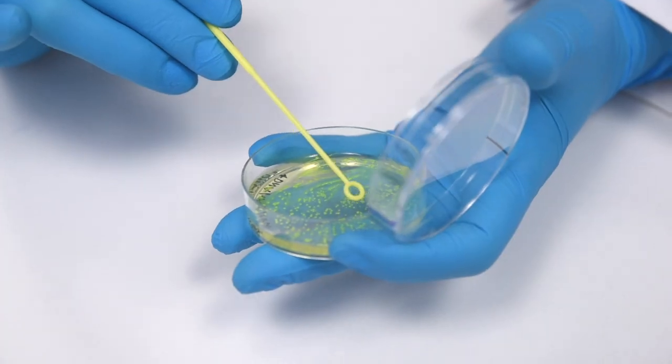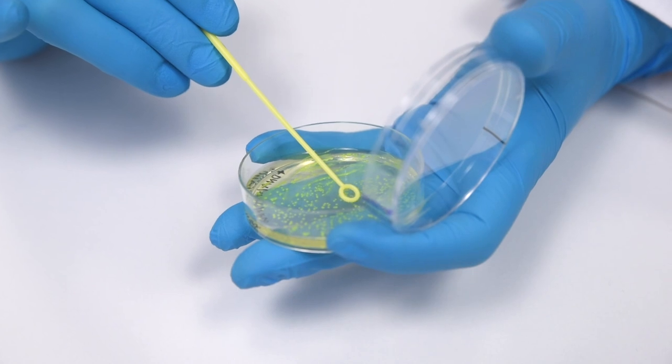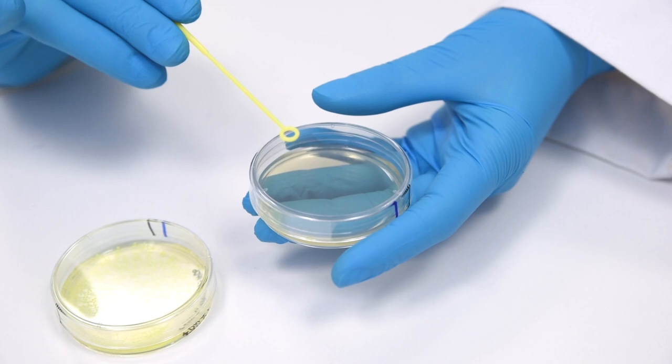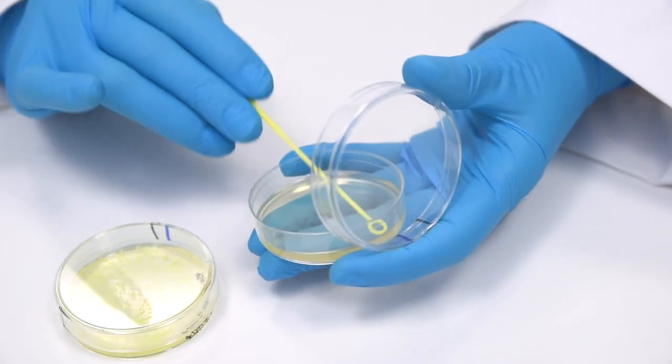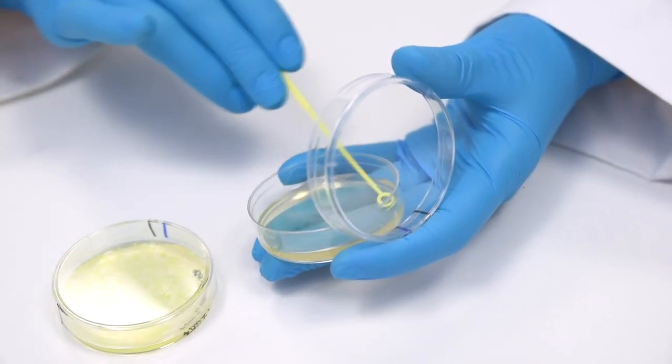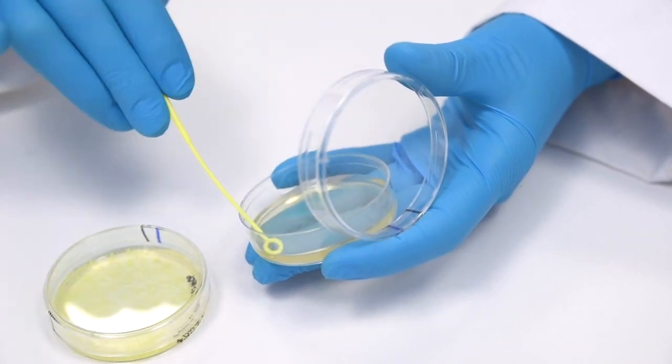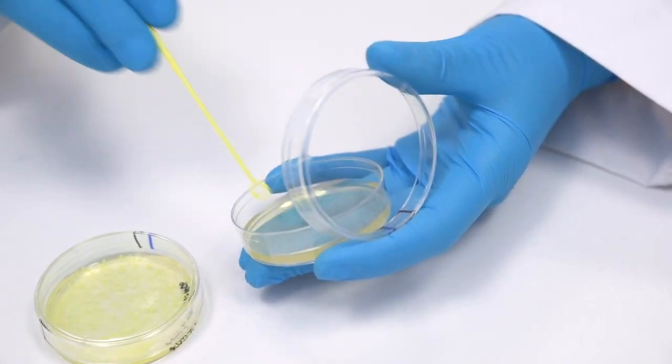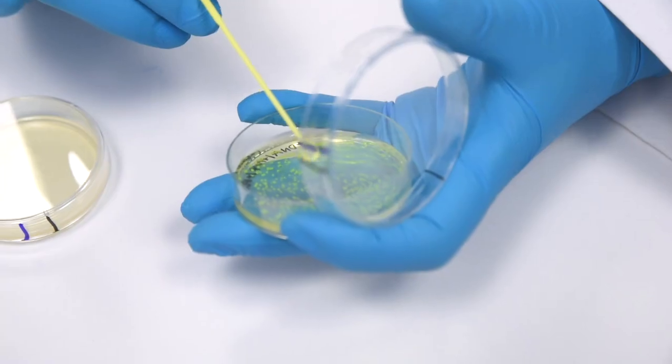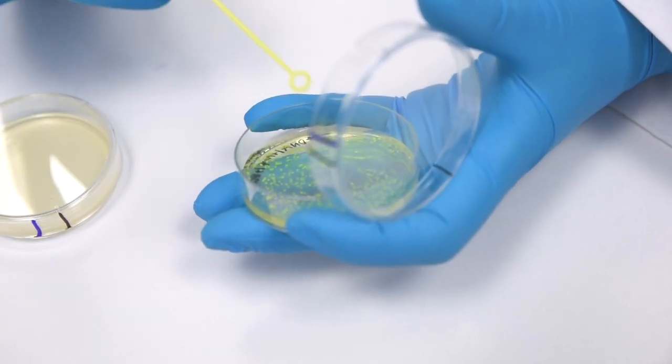Step 3: With an inoculating loop, pick 4 to 5 isolated GFP expressing or glowing colonies. Step 4: Spread the cells evenly and thoroughly over the entire surface. Turn the plate 90 degrees and thoroughly spread again using the same loop. Step 5: Repeat steps 3 to 4 for the second plate.